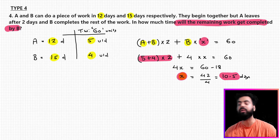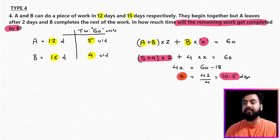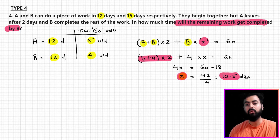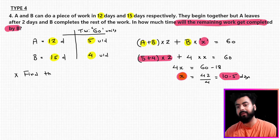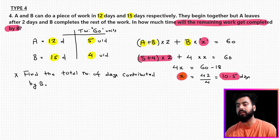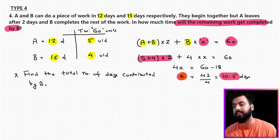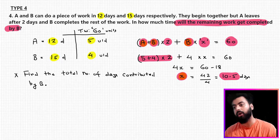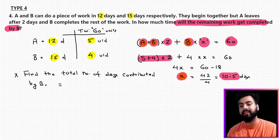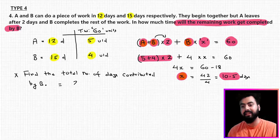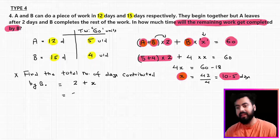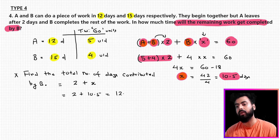From the same setup, different questions could be asked. For example: find the total number of days contributed by B. To answer this, B first worked with A for 2 days, then worked alone for x = 10.5 days. So the total number of days B worked is 2 + 10.5 = 12.5 days.